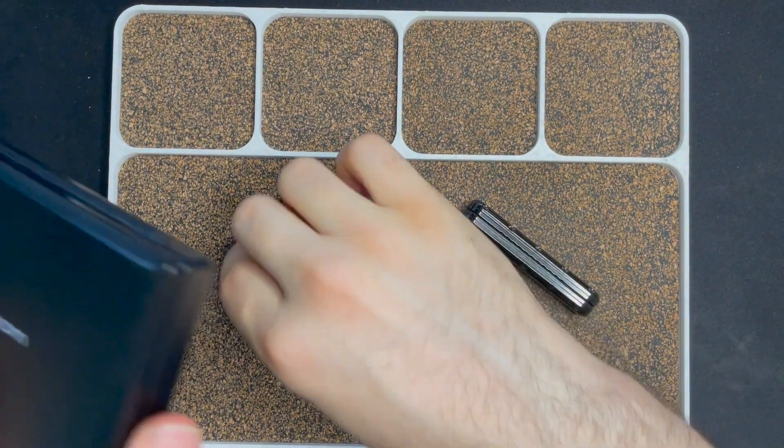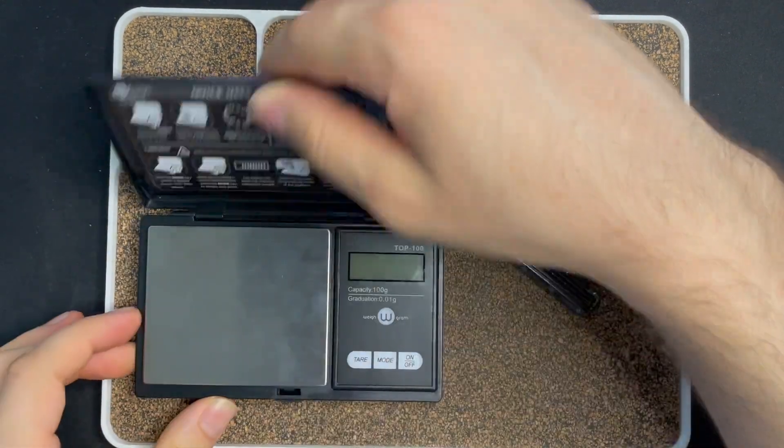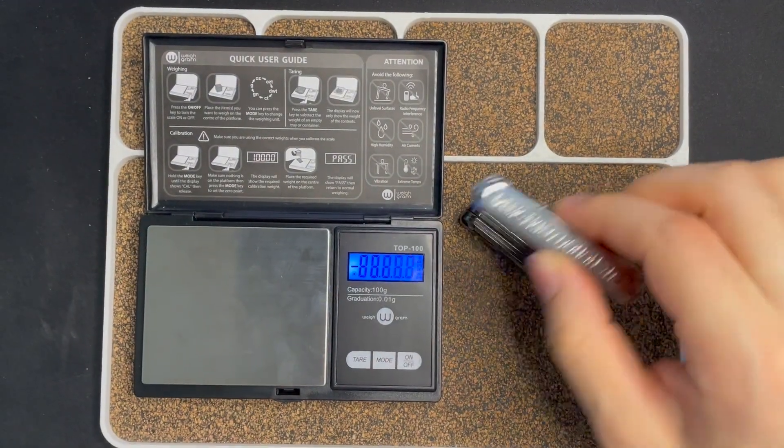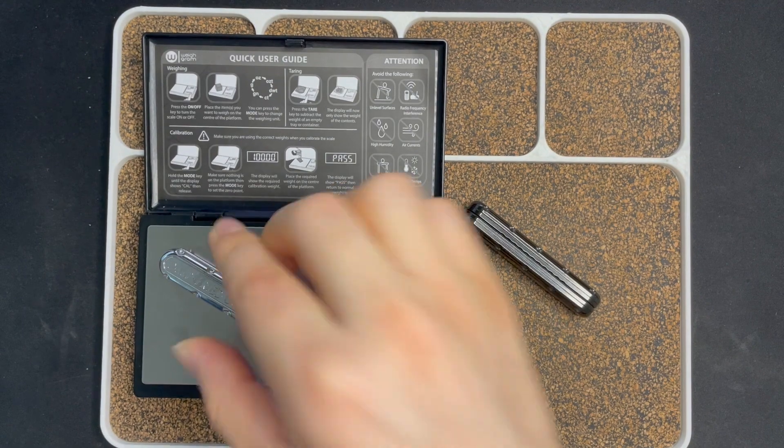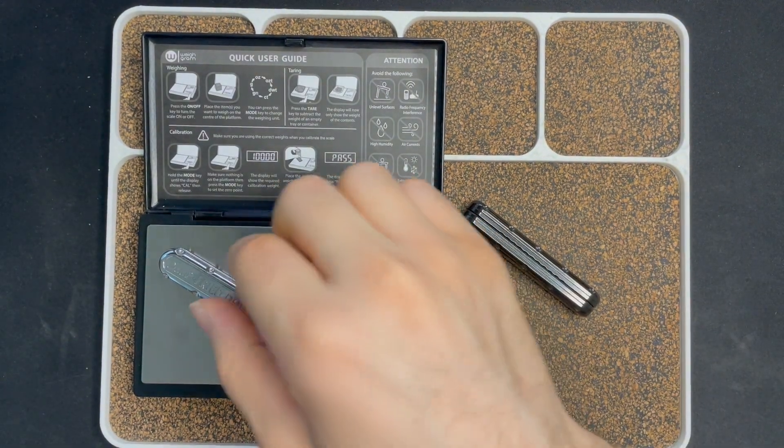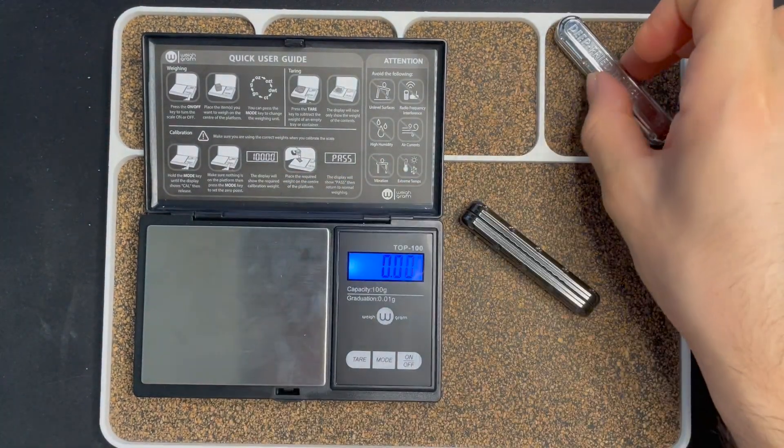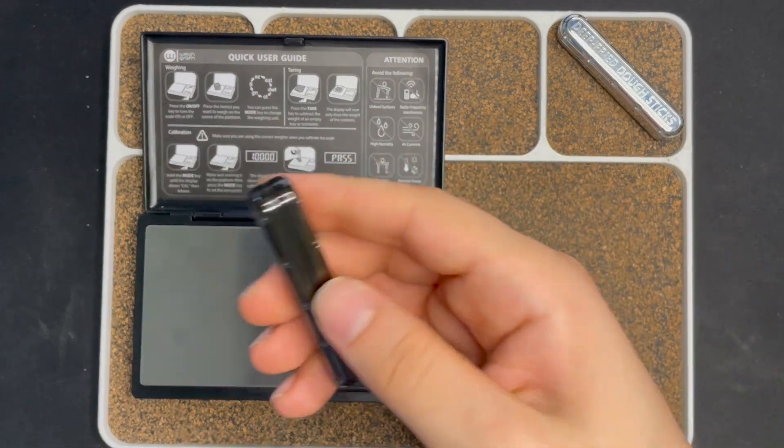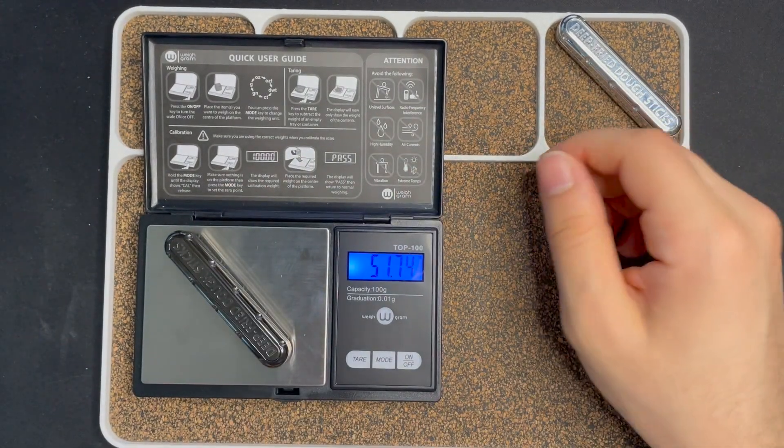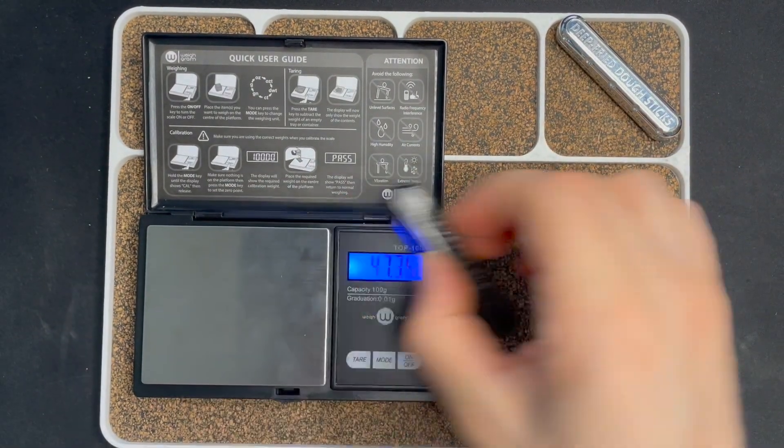Alright, let's go ahead and check out the weight for this thing. This is the stainless steel one: 63 grams. And this is the zirk one, it's gonna be a lot lighter: 51. 12 gram difference.